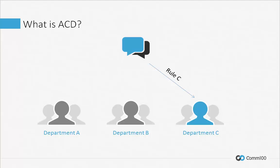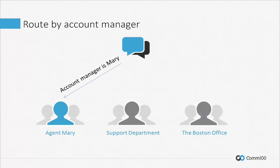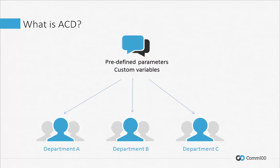The feature really shines when used to distribute chat requests in certain situations. For instance, COM100 Live Chat ACD is extremely useful when you need to route chats based on a user's geographic location, or if you want to route chats to customers' assigned account managers. Imagine if your customers could connect to their branch office or account manager automatically by doing nothing more than logging into their accounts and clicking a chat button. Using predefined parameters and custom variables, you can create routing rules for just about any situation you can imagine.